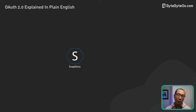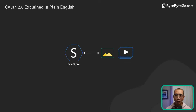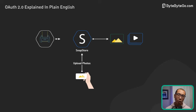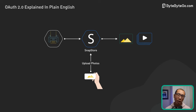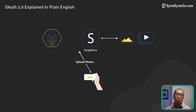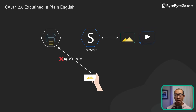Now let's play this out with an example. Consider a photo storage application, SnapStore. We've been using it to store our photos, and now we want to print some of them using a third-party printing service, PrintMagic. Instead of manually uploading each photo to PrintMagic, we ask PrintMagic to do the job.